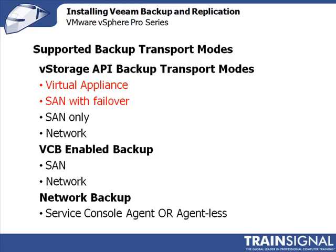The first section is the vStorage API backup transport mode. With the vStorage API, you need ESX 3.5 or later — preferably vSphere 4 — though Veeam Backup works with mixed environments. With Virtual Appliance mode, you install Veeam Backup as a virtual appliance on an ESX host. A best practice is to ensure that virtual machine resides on the VMFS datastore with the largest block size, such as an 8-megabyte block size, to avoid problems when backing up datastores with larger block sizes.